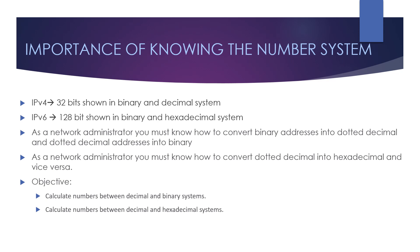Did you know that IPv4 is 32 bits long and can be shown in binary system for computers and networks, and in decimal system for people? IPv6 is 128 bits long and can be shown in binary for networks and computers, and in hexadecimal for people. As a network administrator you must know how to convert binary addresses into dotted decimal and vice versa, and also how to convert dotted decimal into hexadecimal. The objective of this lesson is to calculate numbers between decimal and binary, and also between decimal and hexadecimal.